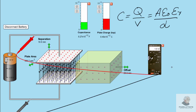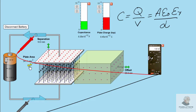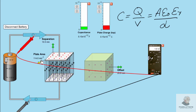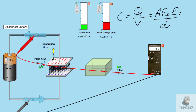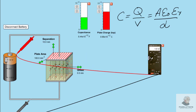Dear viewers, the next thing is what happens when the battery remains connected to a capacitor or when it is removed. First, let us say the battery is connected. If we change the area, separation, or add a dielectric, what happens to the plate charge and the potential across the plates? Keep watching the voltmeter. I am changing the area — nothing is happening to the voltmeter. I am changing the separation — nothing is happening. I am adding the dielectric — still nothing is happening. Whenever the battery is connected, the voltage across the plates remains constant.